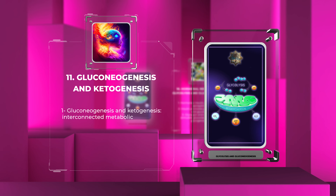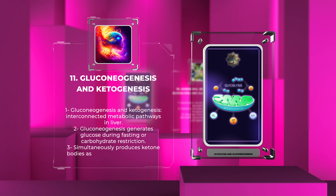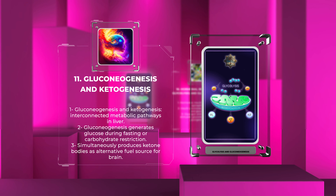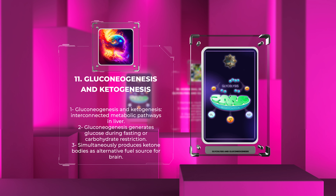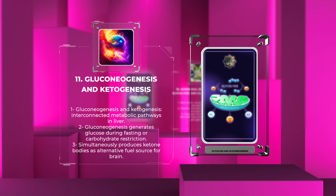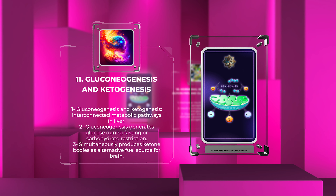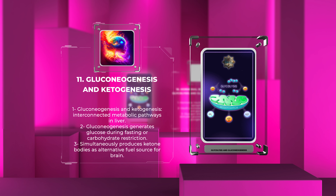Gluconeogenesis and ketogenesis are interconnected metabolic pathways that occur primarily in the liver. During prolonged fasting or carbohydrate restriction, gluconeogenesis generates glucose to meet the energy demands of vital organs, while simultaneously producing ketone bodies as an alternative fuel source for the brain. The regulation of these pathways ensures energy availability and prevents excessive ketone body accumulation.